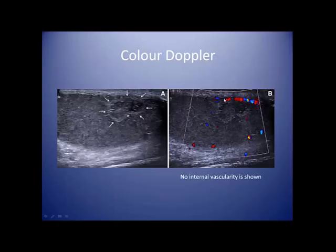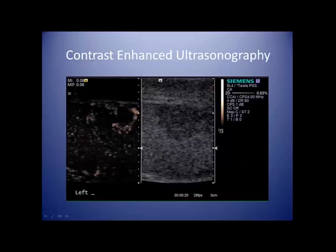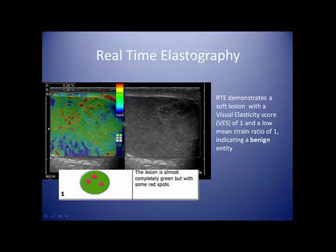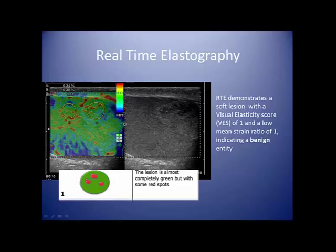B-mode ultrasonography images of the left testis demonstrate a heterogeneous lesion with an incomplete hypoechoic rim and iso-hypo and hyperechoic areas. On applying colour Doppler there is no internal vascularity, and on injection of microbubbles — sulfur hexafluoride gas — there is no internal vascularity with perhaps a suggestion of a rim. With real-time elastography the lesion is completely green but with some red spots: a score of 1 and a low mean strain ratio of 1, indicating a soft lesion with benign etiology.